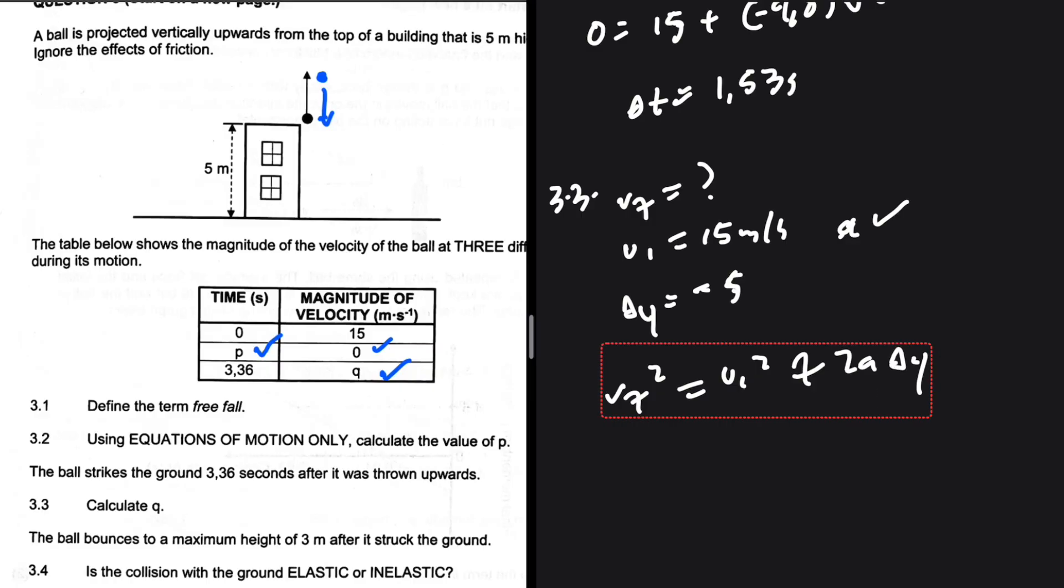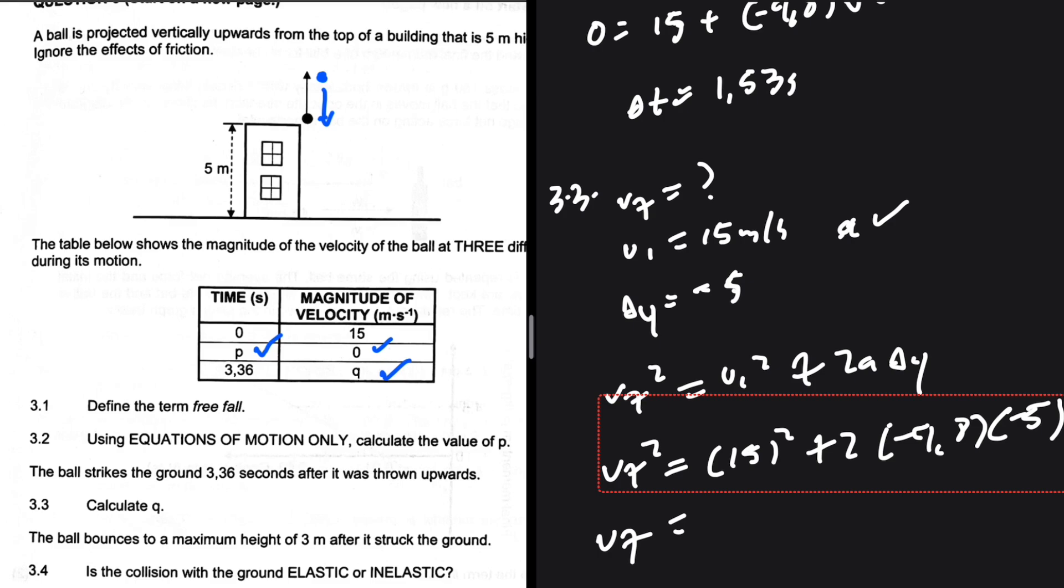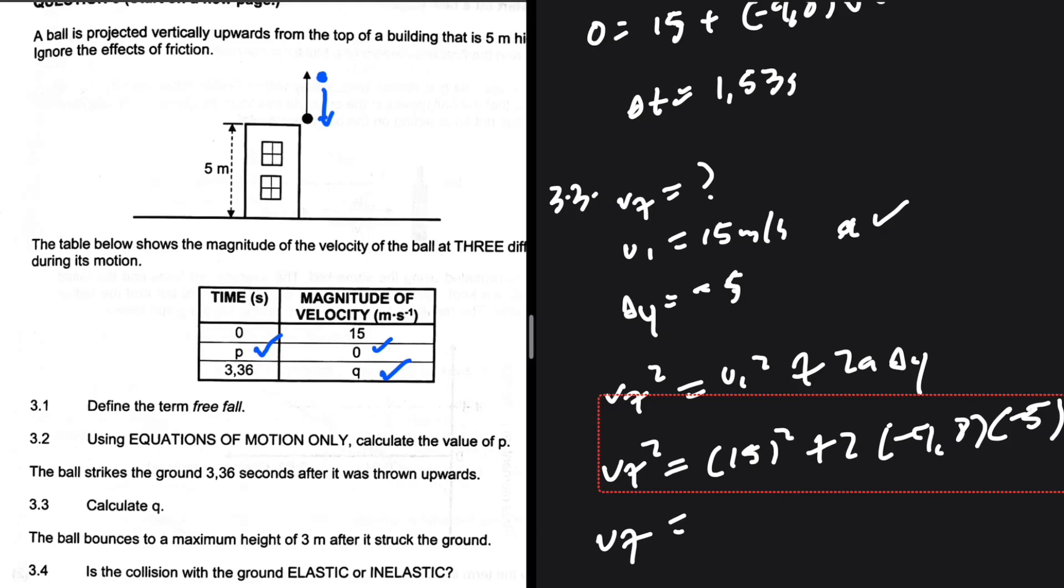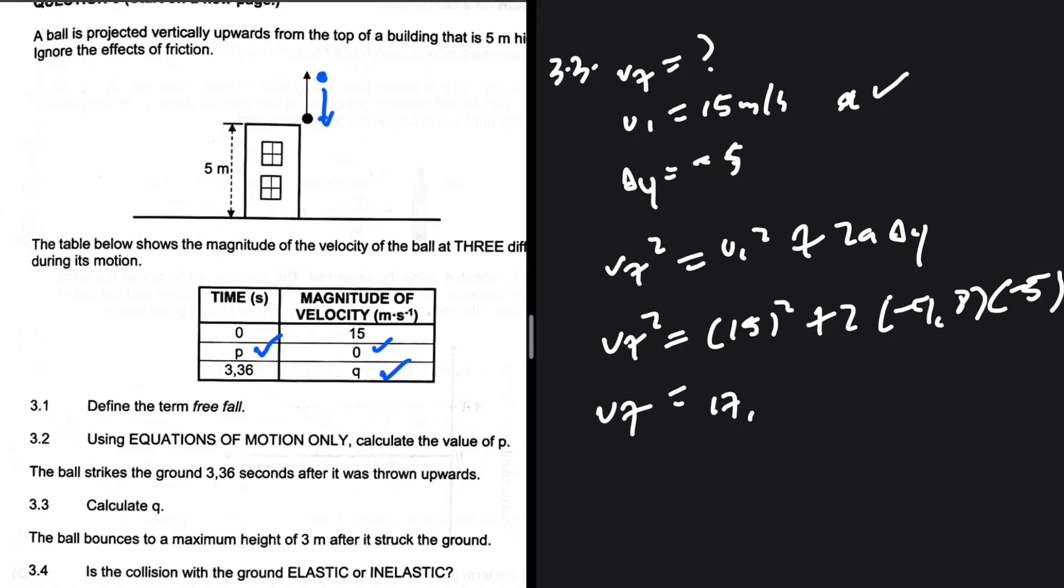vf squared equals vi squared plus 2a delta y. These variables that we have allow us. So vf squared, that's what we're looking for. vi squared, that is 15 squared, plus 2a, minus 9.8, delta y, minus 5. So vf equals the square root of 15 squared plus 2 times minus 9.8 multiplied by minus 5. vf is 17.97 meters per second.